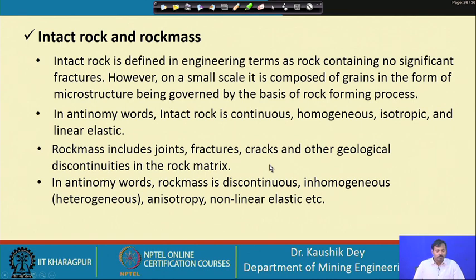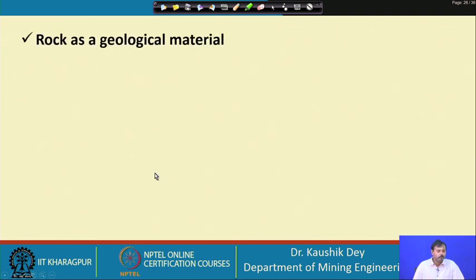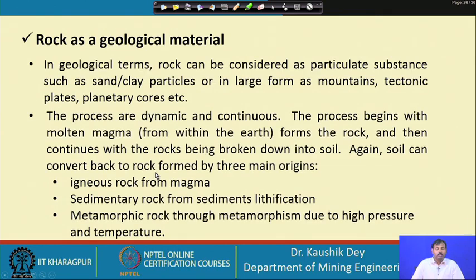Rock mass basically includes joints, fractures, cracks, and other geological discontinuities. Rock itself is considered continuous, homogeneous, and isotropic, whereas rock mass is anisotropic, inhomogeneous, and non-linear non-elastic material. In geologic terms, rock can be considered as particulate substance such as sand or clay particles, or in large forms such as mountains, tectonic plates, and planetary cores.